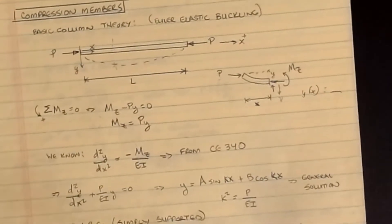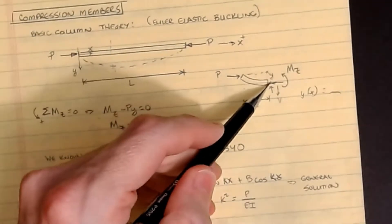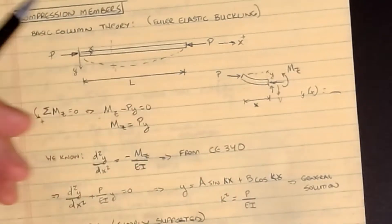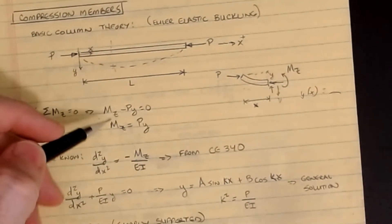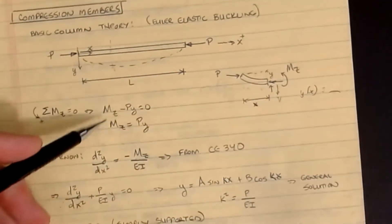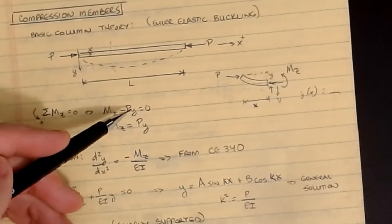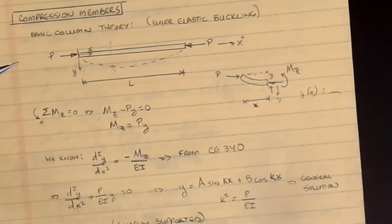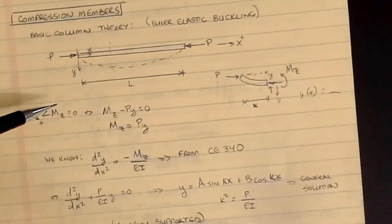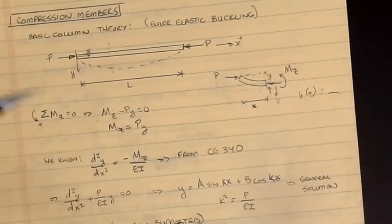Euler took a moment about the cut line — the moment about the z-axis equals zero. The equation derived from the free body diagram is: the moment about the z-axis minus P times y equals zero, which means the moment about the z-axis equals P times y. It's a very simple moment equation.